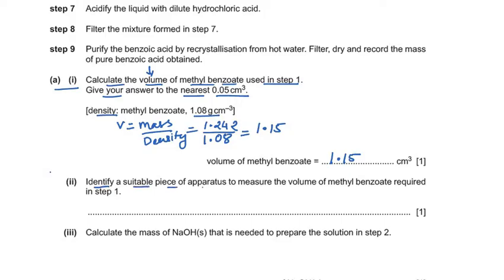The next sub-question asks us to identify a suitable piece of apparatus to measure the volume of methyl benzoate required in step 1. Since the volume is a precise 1.15 cm³, the most accurate apparatus would be a burette.